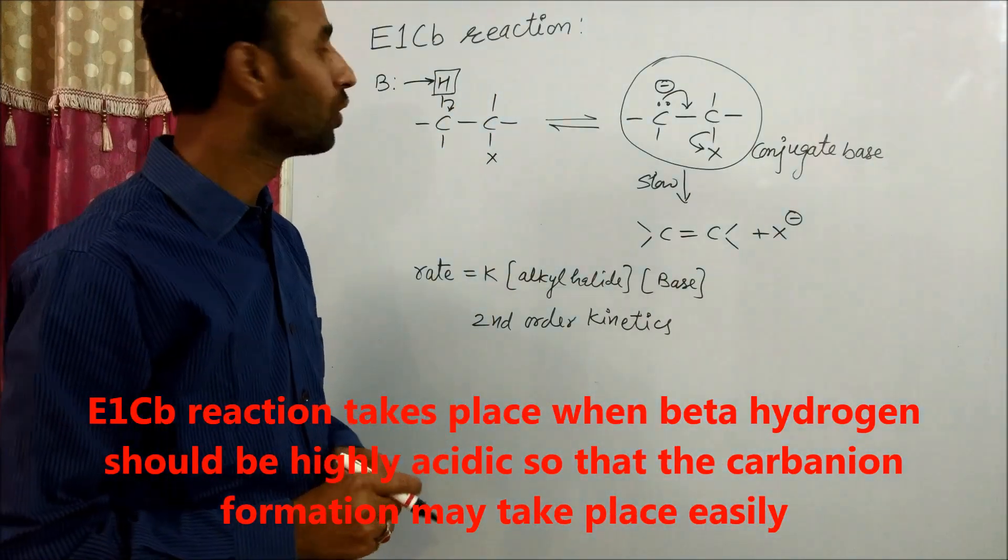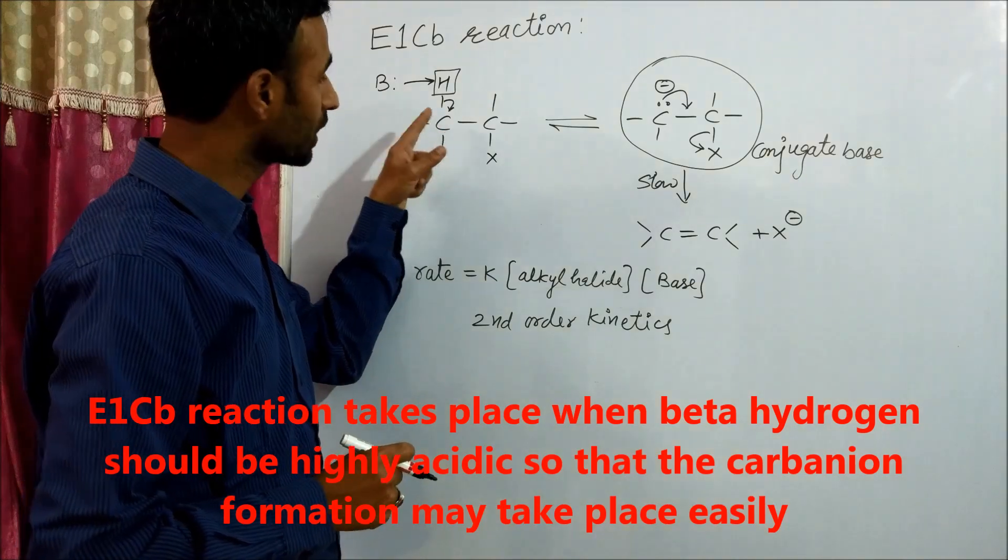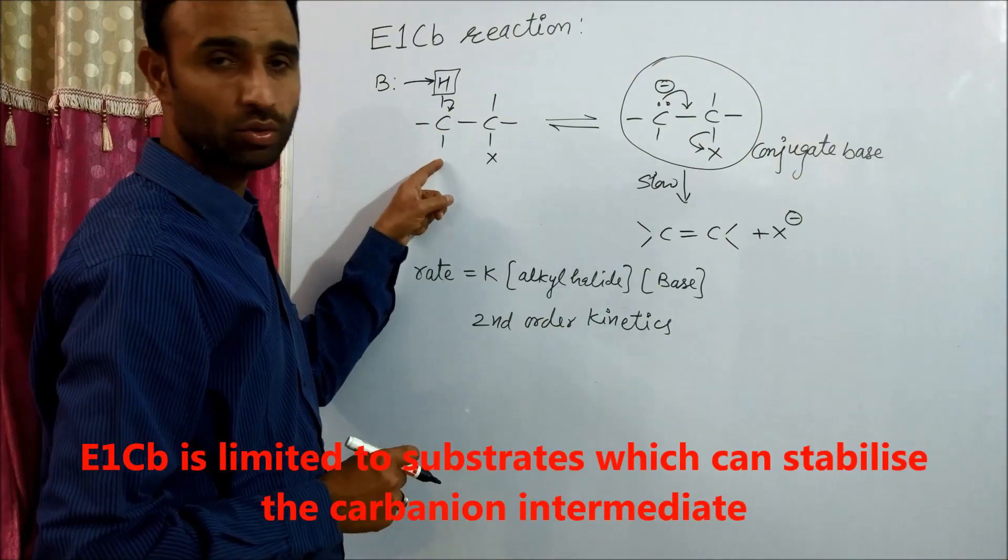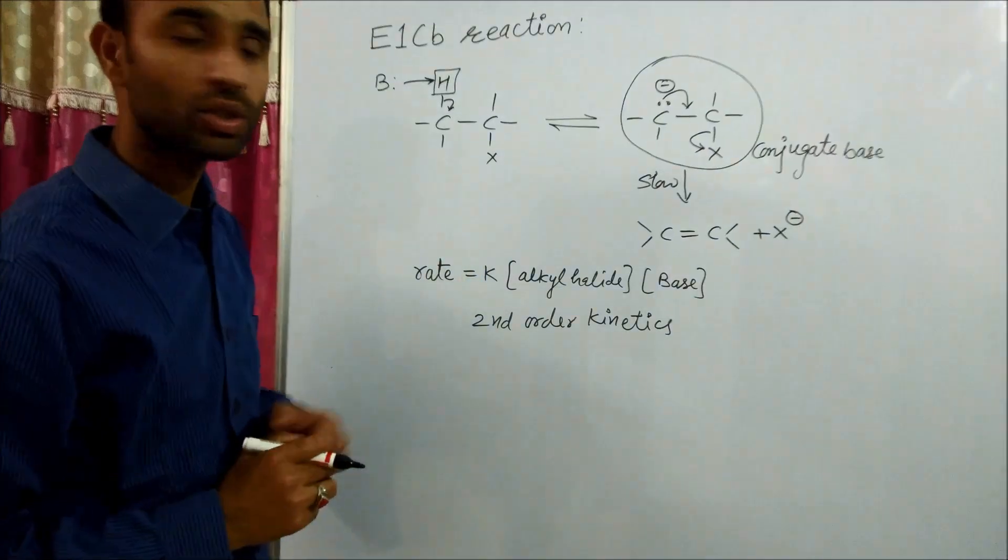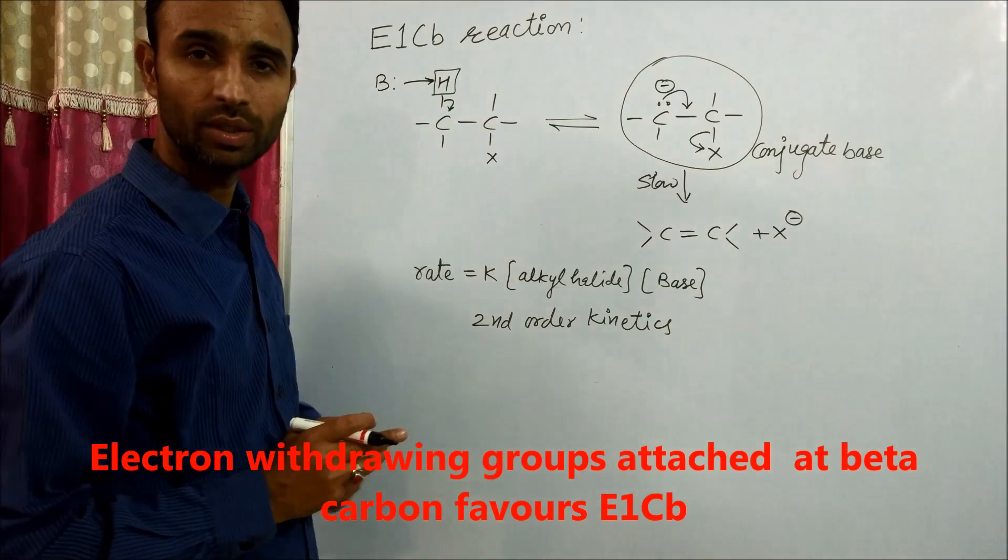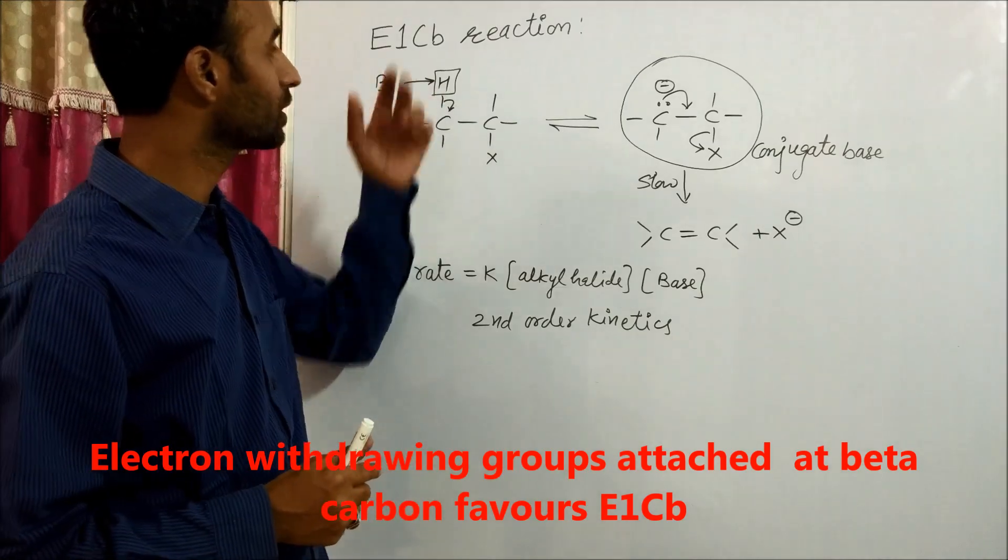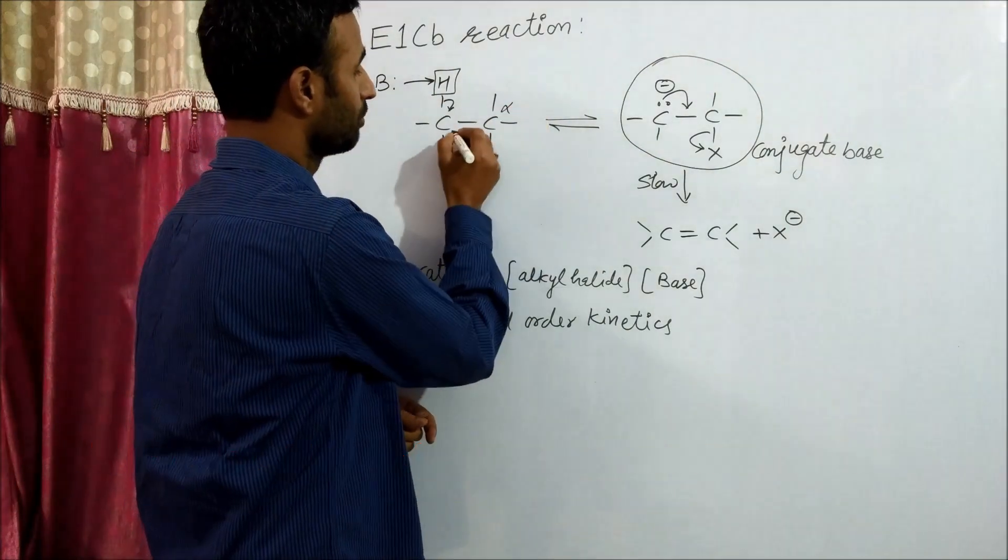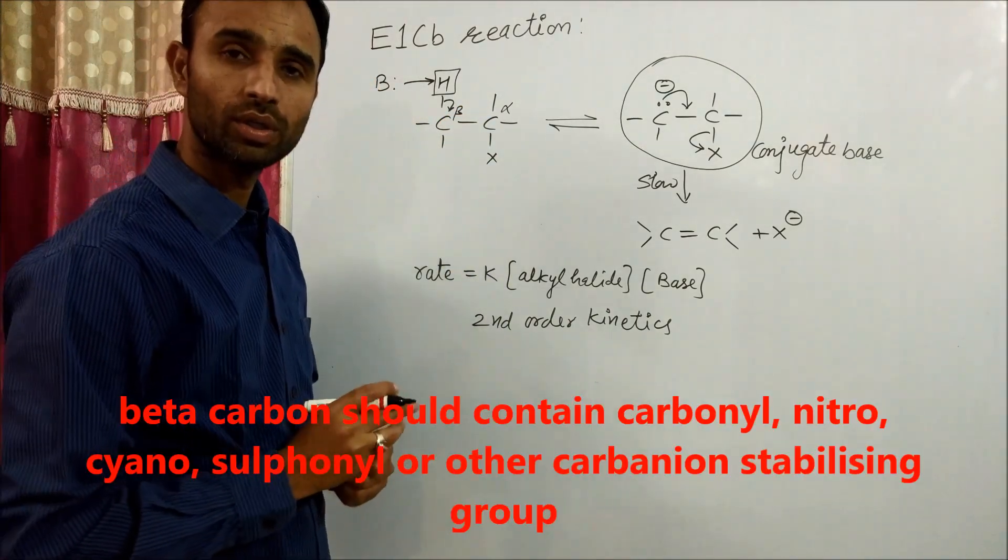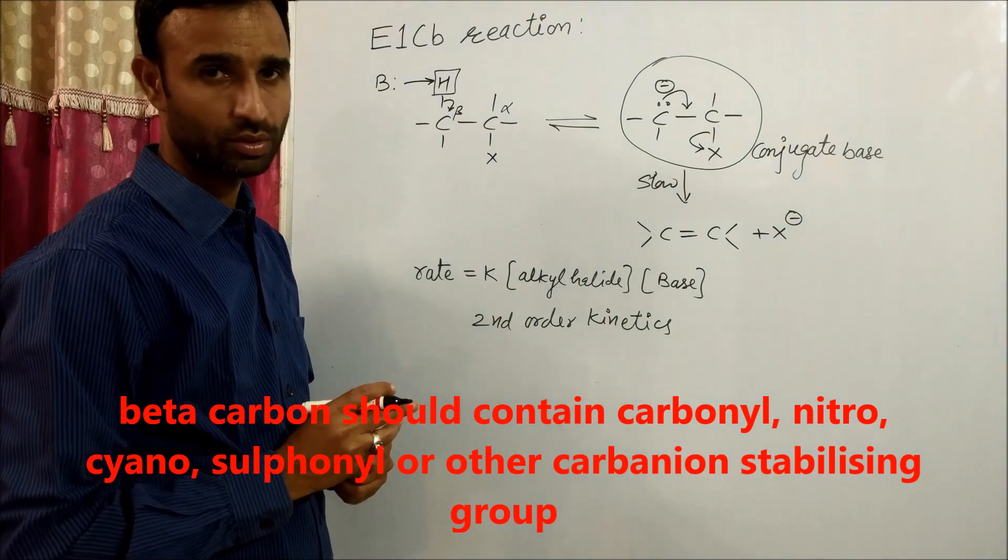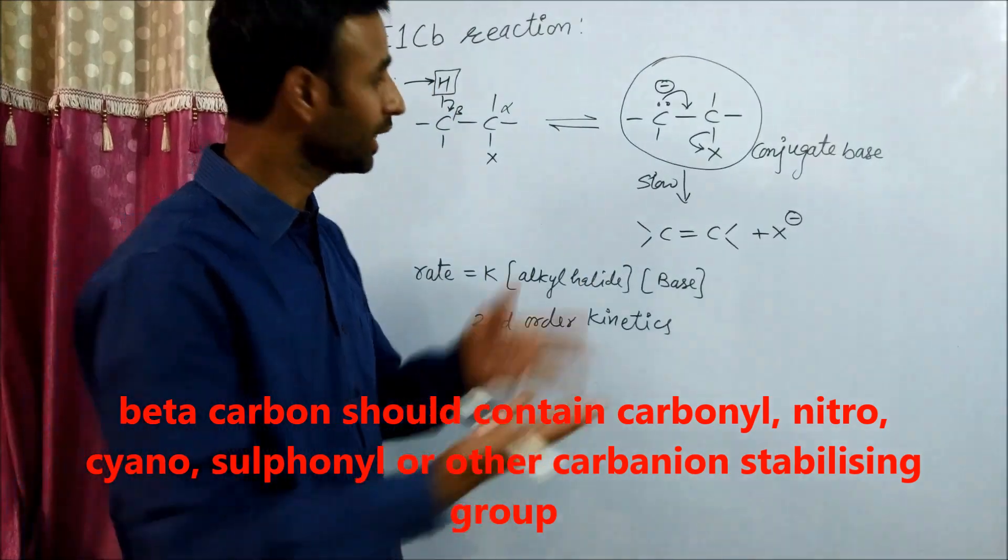This hydrogen is acidic when the carbon is attached to electron withdrawing groups. The first factor favoring E1CB reaction is that the beta carbon must be attached to electron withdrawing groups, which stabilize the carbanion.